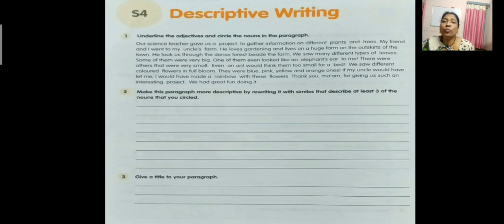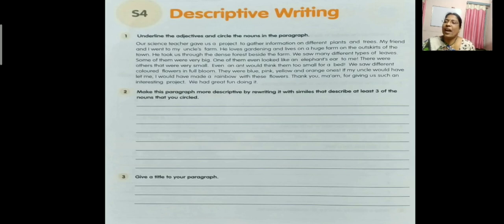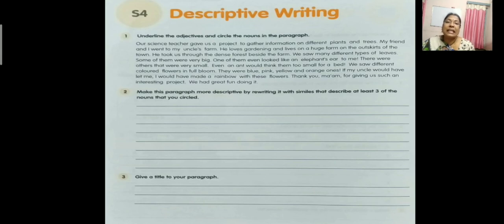'Thank you ma'am for giving us such an interesting project. We had great fun doing it.' Project is a noun — circle it. Interesting describes the project — it is an adjective. So we have circled all the nouns and underlined the adjectives. Now make this paragraph more descriptive by rewriting it with similes that describe at least three of the nouns you circled.